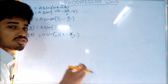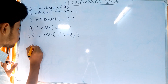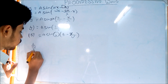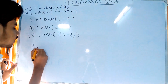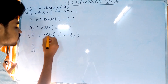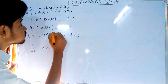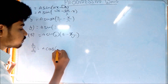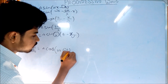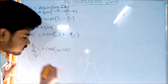Particle velocity is the rate of change of displacement with respect to time, so we take ∂y/∂t. For the first equation, differentiating gives: particle velocity = aω cos(kx − ωt).